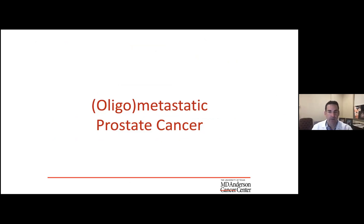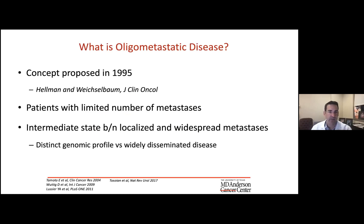Oligometastatic prostate cancer — I put oligo in parentheses because really this is all metastatic prostate cancer. In reality, we're back to the high-volume/low-volume separation, which probably has some association with significant biology. More aggressive biology tends to be found in higher-volume cancers. Oligometastatic disease was a concept proposed in 1995 by Hellman and Weichselbaum — the idea that patients with limited metastases have a state between localized and widespread disease, at the early time metastases first develop, with distinct genomic profiles versus those with widely disseminated cancer.